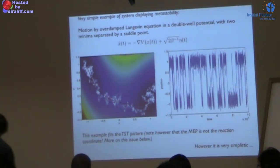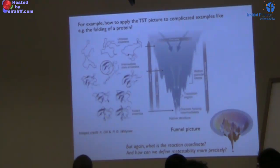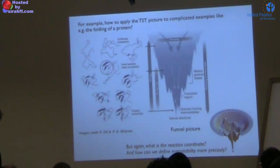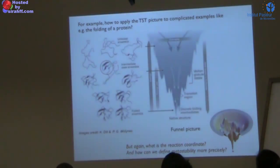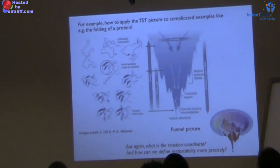However, this picture is very simplistic. Think of the beautiful protein folding funnel pictures you find in books or talks — it's not clear at all what the axis represents or what reduction is being performed. Even without going to such complicated examples, there are low-dimensional systems that exhibit the same problem.